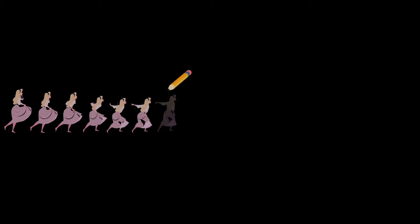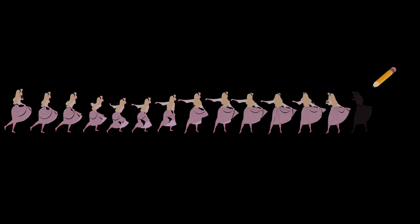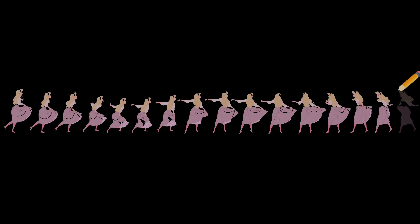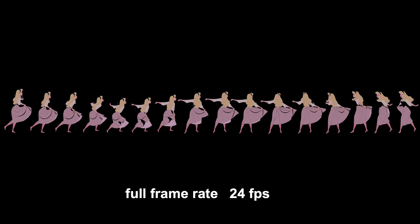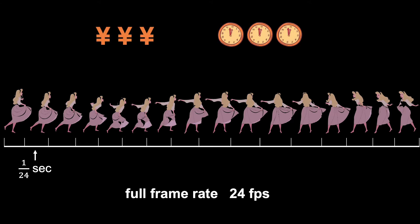Unlike natural videos that are directly recorded by cameras, or some 3D videos rendered by computers, the 2D animations are made from the scripts drawn by hand. A continuous sequence of motion will require a lot of work from professional animators. If the animation producer decides to make a film at the full frame rate of 24 frames per second — that is, to draw a unique script for every 24th of a second — it will burden a huge amount of budget and will require a long production cycle.